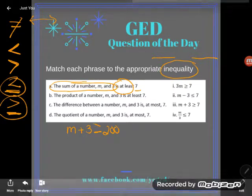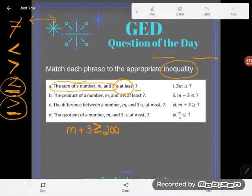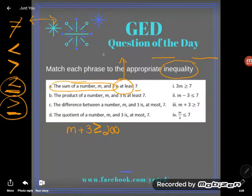And so what I want is this M plus 3 to be greater than or equal to 7. And that's a really tricky thing about that phrase, at least. Be careful. At least is the opposite of what a lot of students expect, it's greater than or equal to.